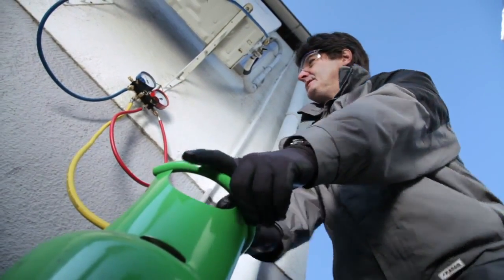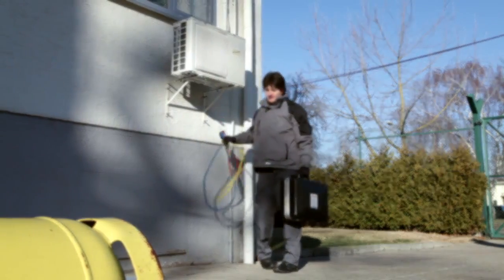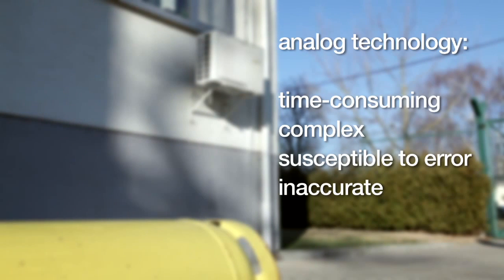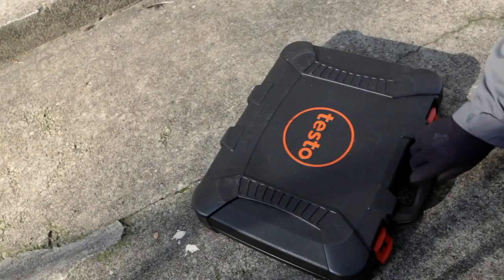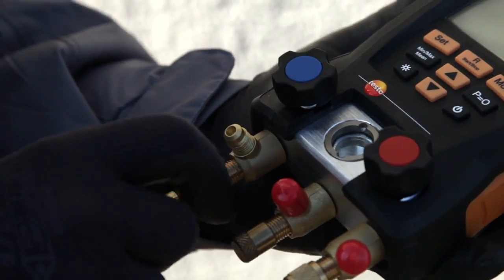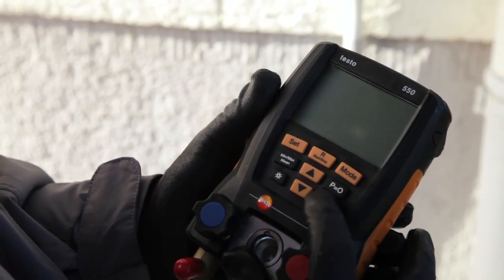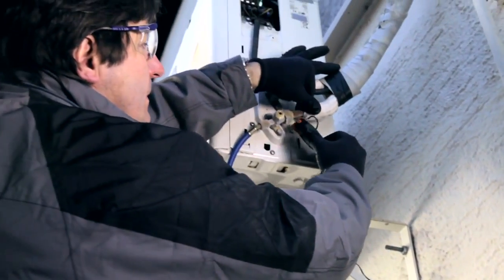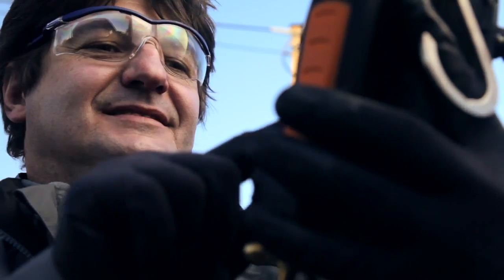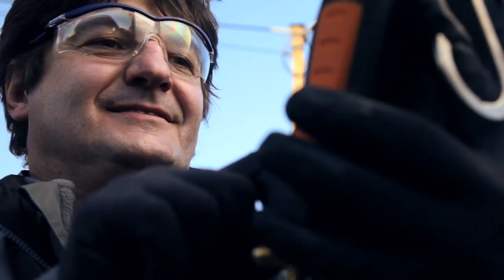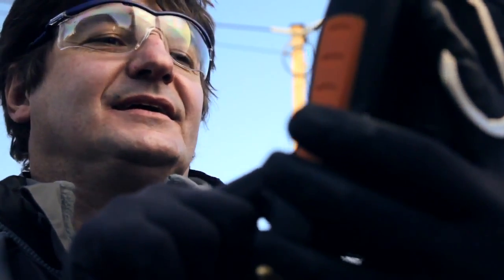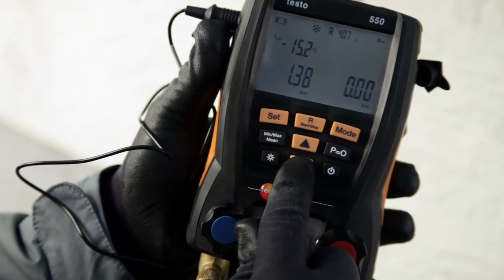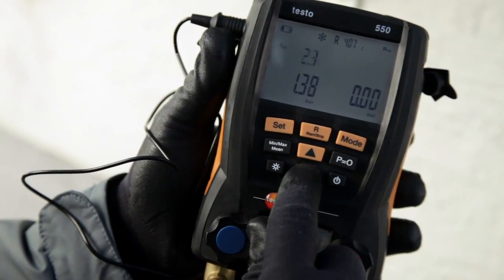Consequently, the systems work inefficiently and are susceptible to damage. Analog technology: time-consuming, complex, susceptible to error, inaccurate. Take the step into digital refrigeration and air conditioning technology. The electronic manifold from testo takes care of all your important tasks, and it does it highly accurately, repeatably, without errors, and conveniently.